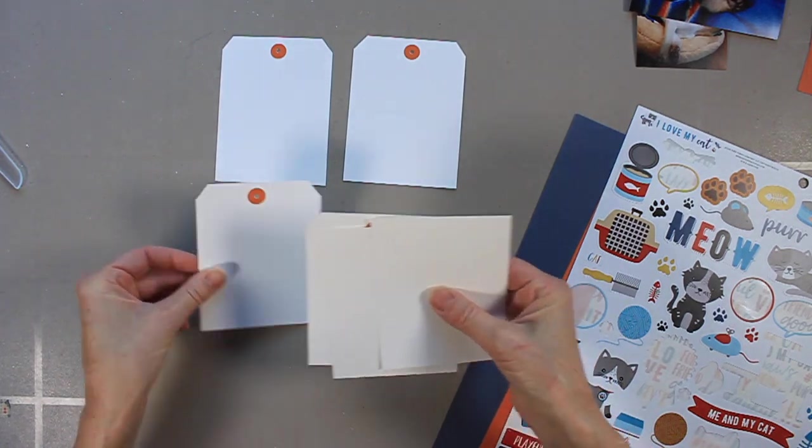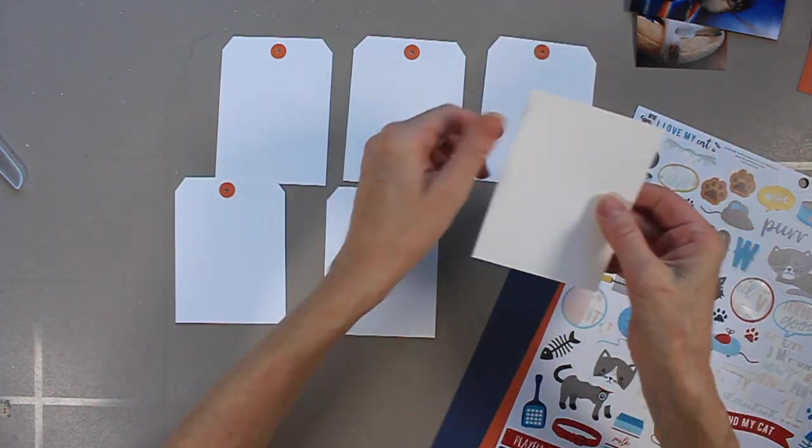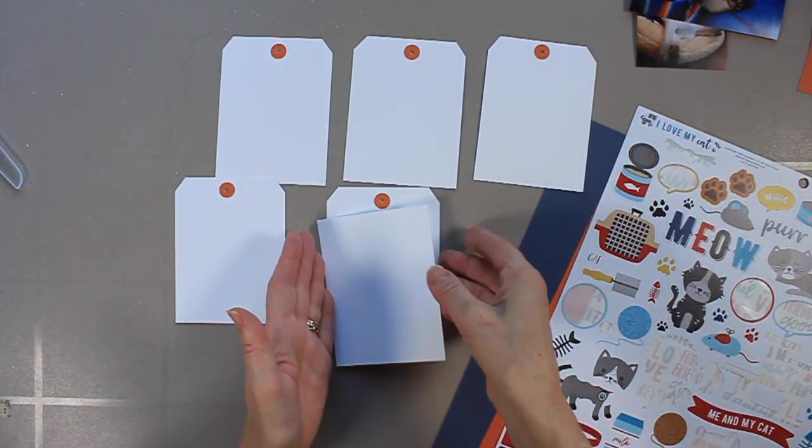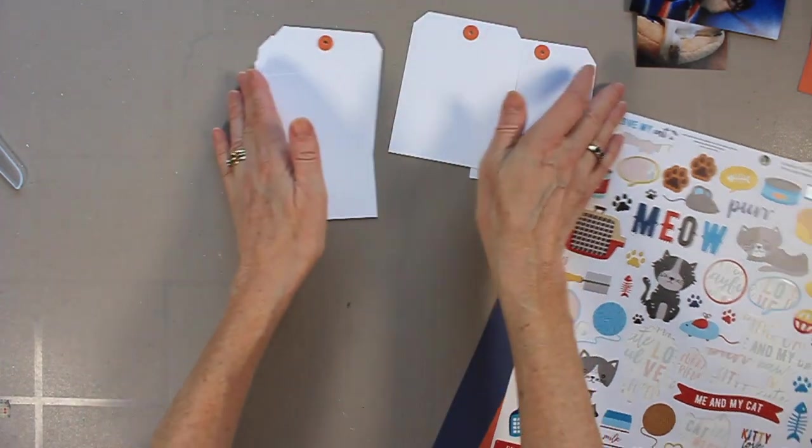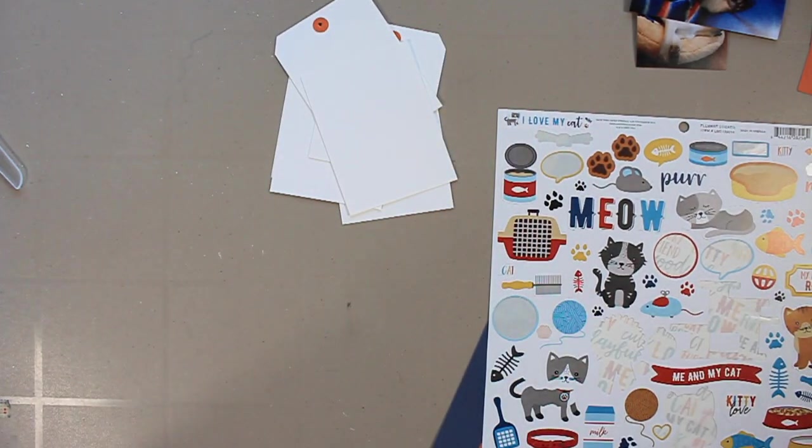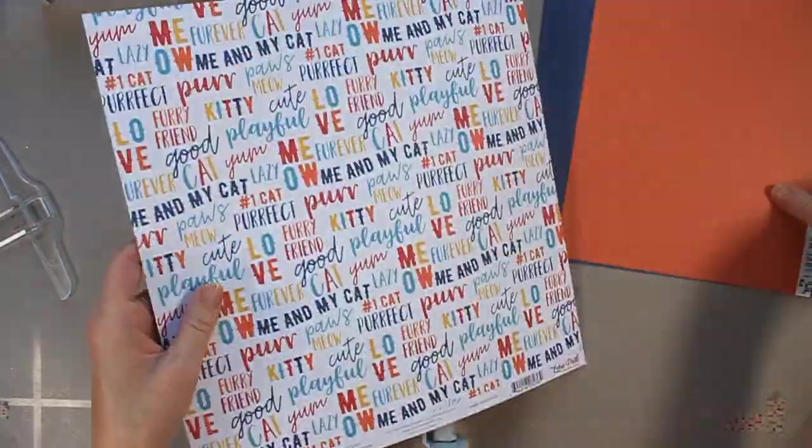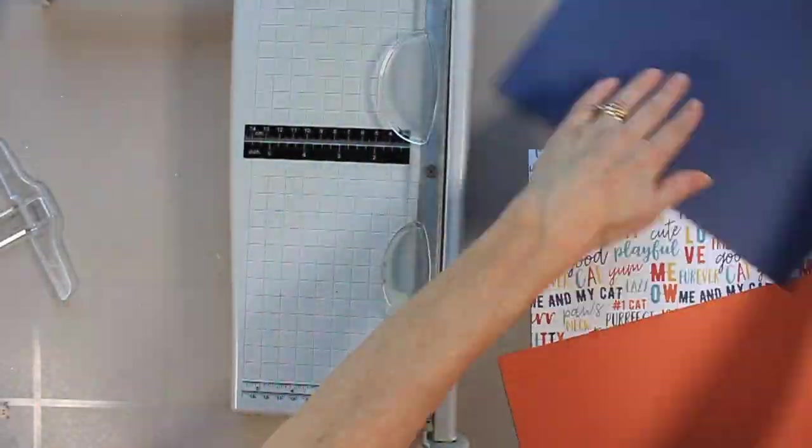And now I'm showing you the tags. I made five of the six tags, but I'm going to make one for you on camera. I often use tags, and I do have tag punches, but for this one, I'm just going to make it because I didn't have a big tag punch.